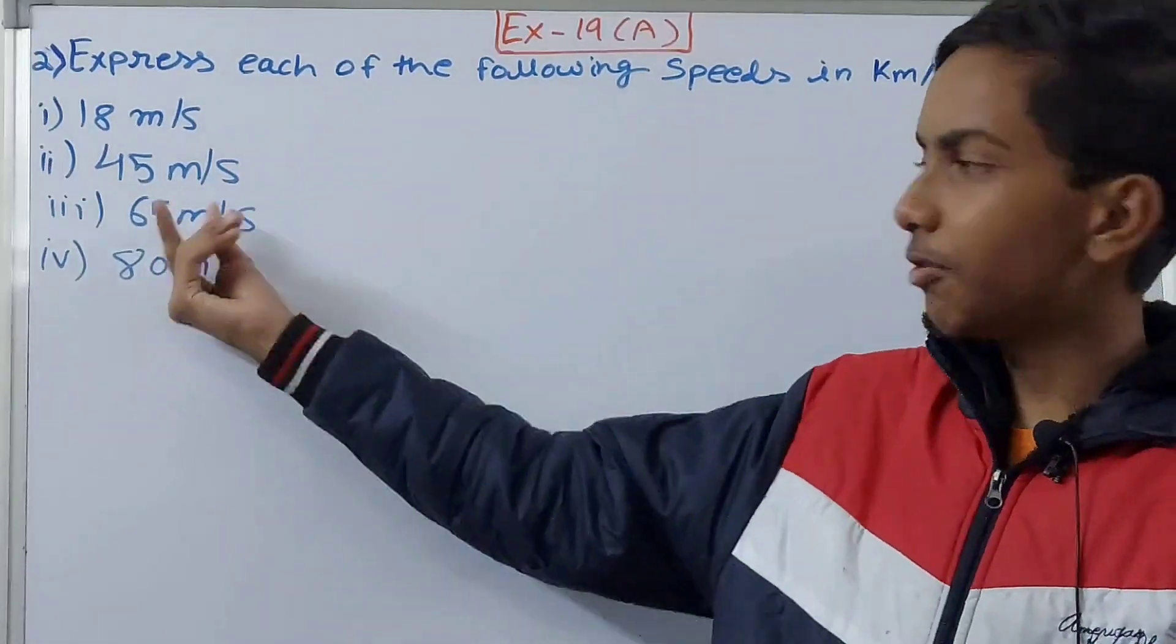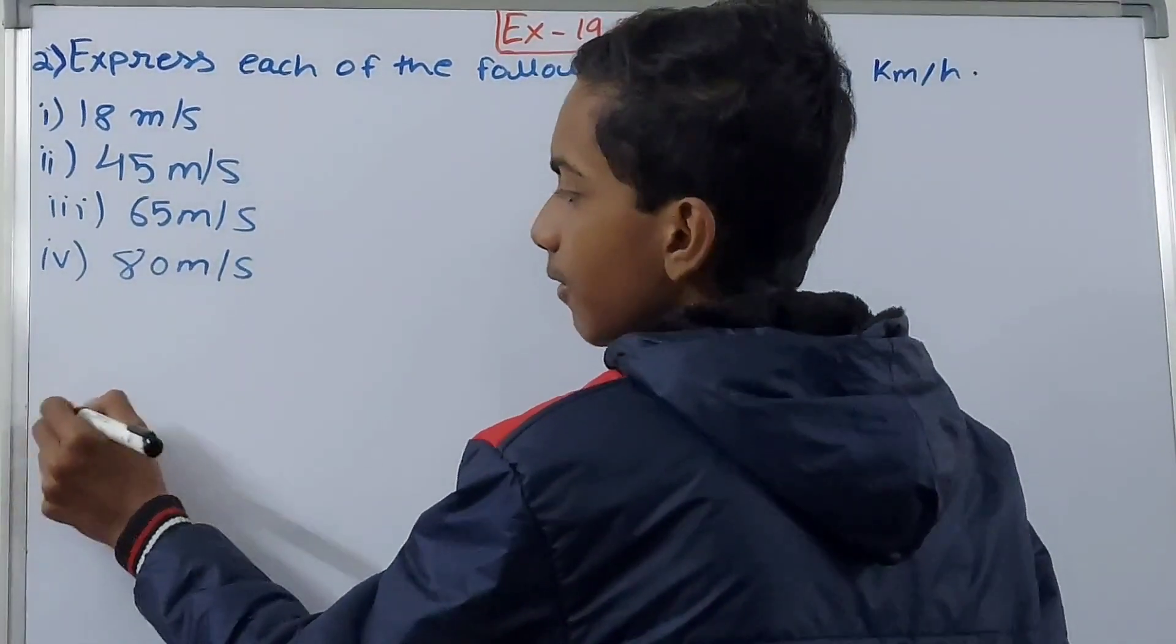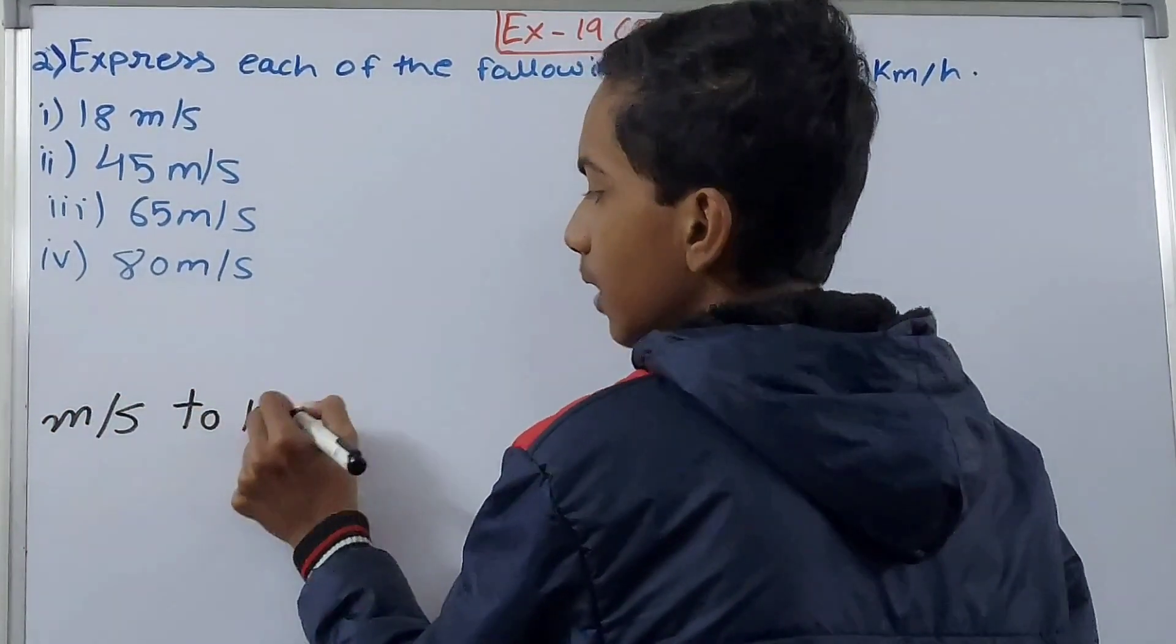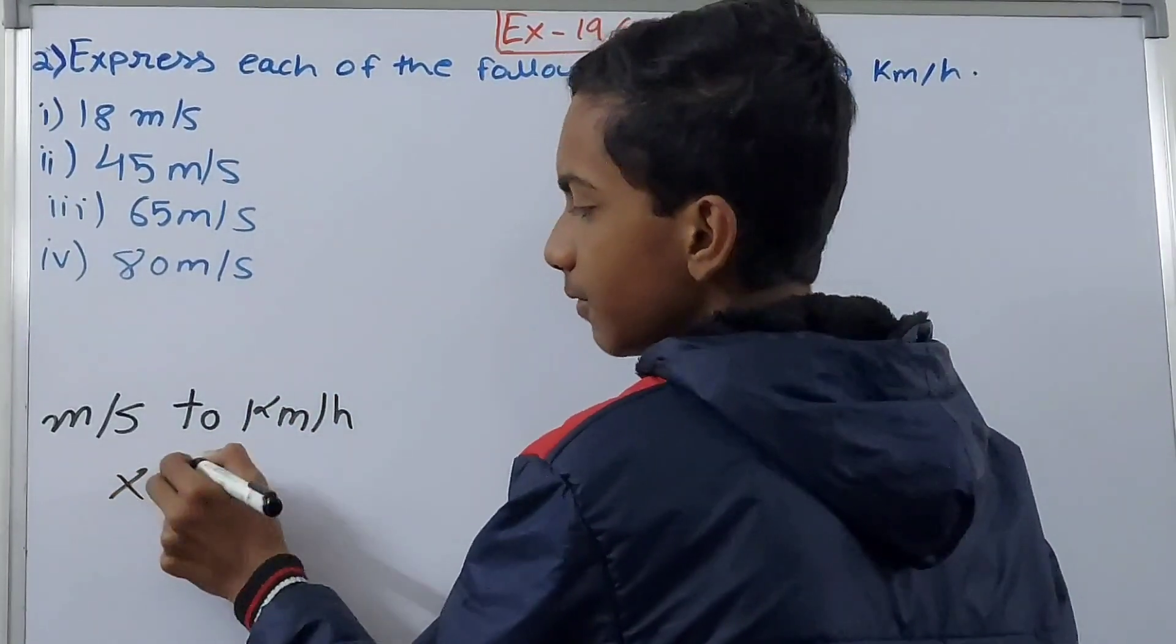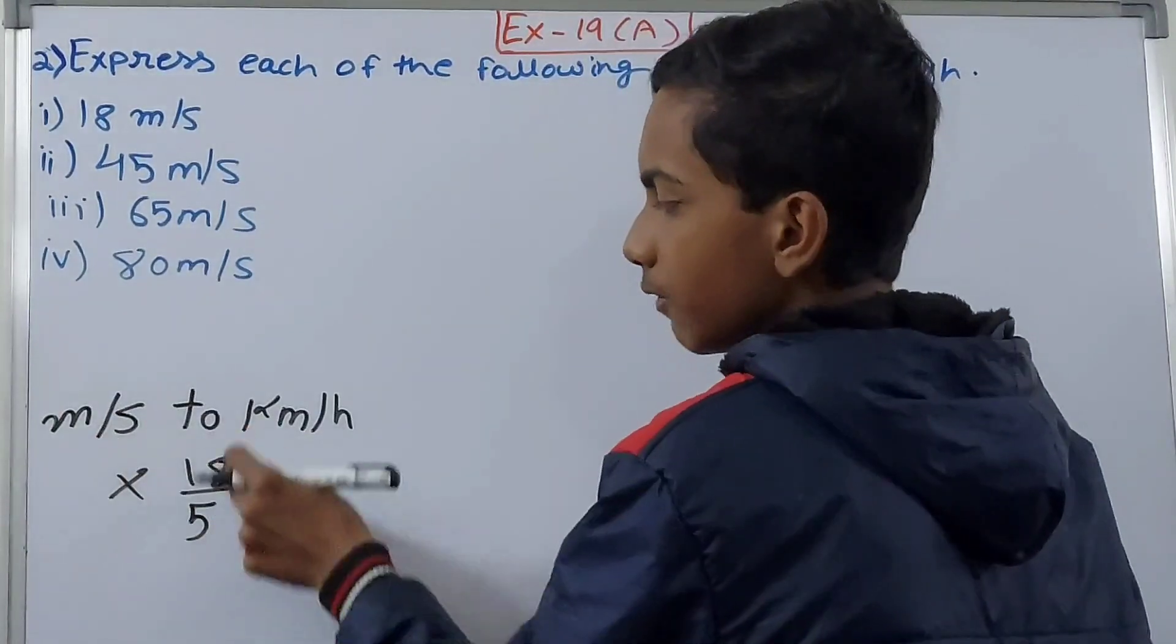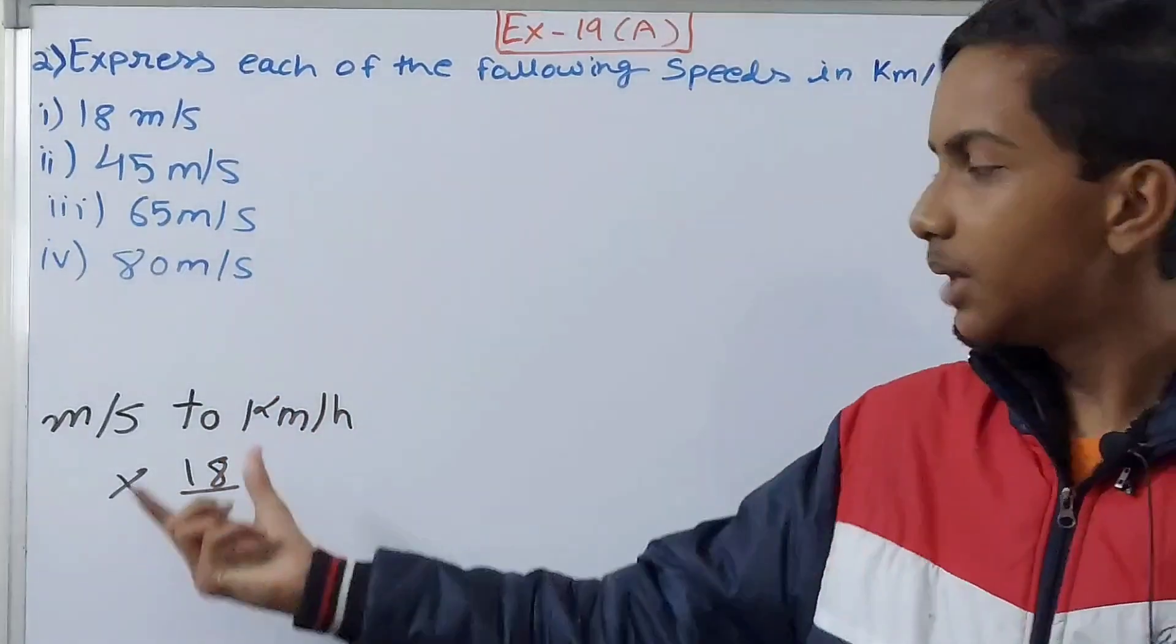We discussed in the previous question that when going from meters per second to kilometers per hour, we multiply by 18/5. From kilometers per hour to meters per second it's 5/18, and from meters per second to kilometers per hour it becomes 18/5.